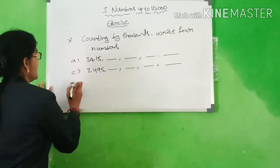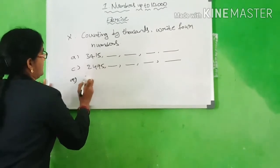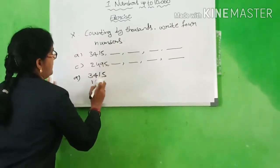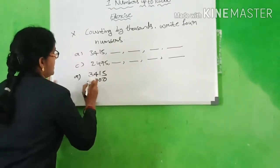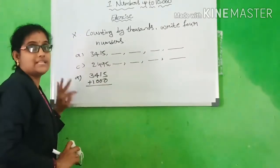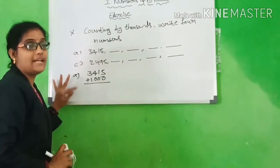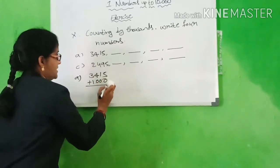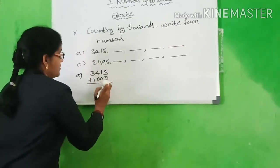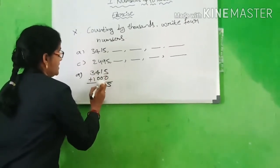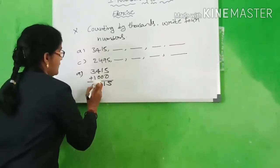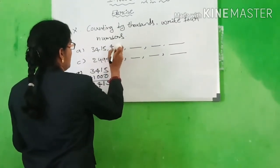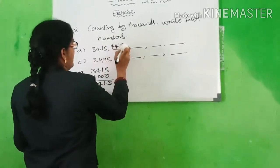3,415 plus 1000. What is the sum we will get? 5 plus 0 is 5, 1 plus 0 is 1, 4 plus 0 is 4, 3 plus 1 is 4. What is the answer? 4,415.